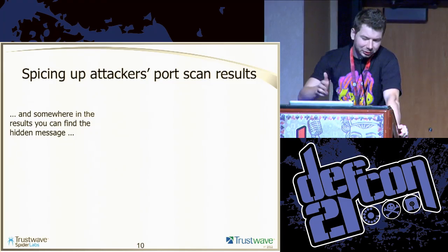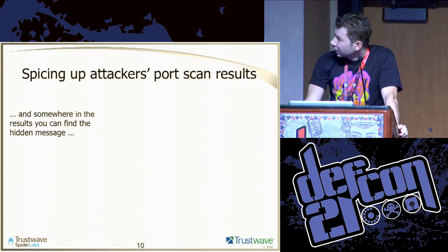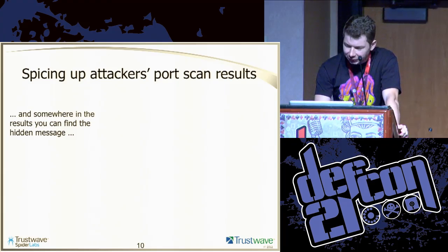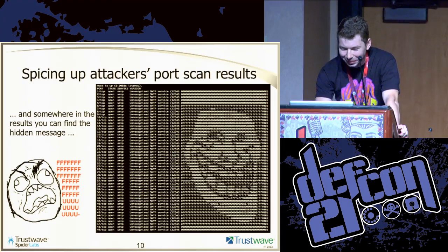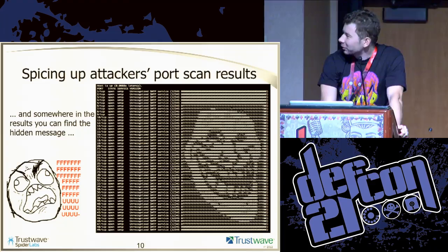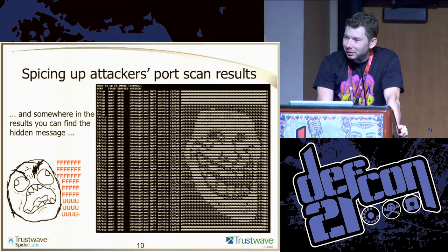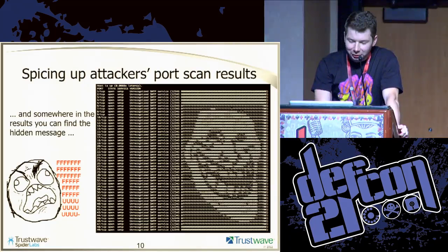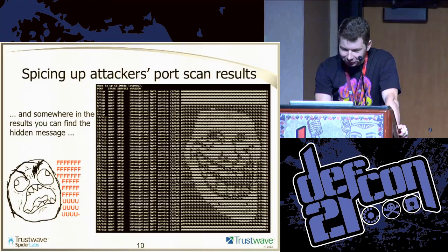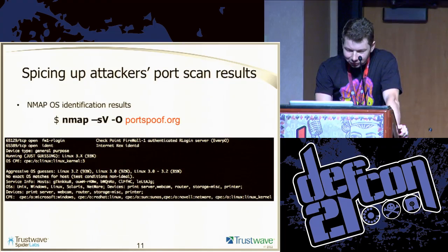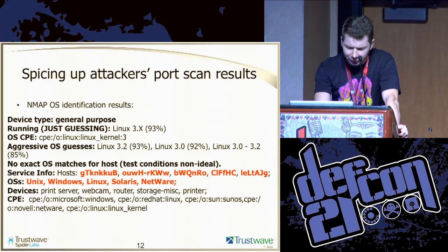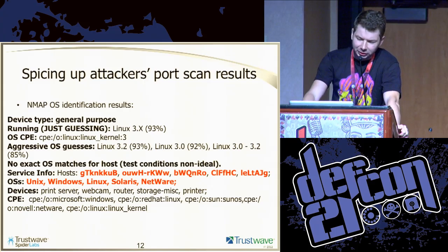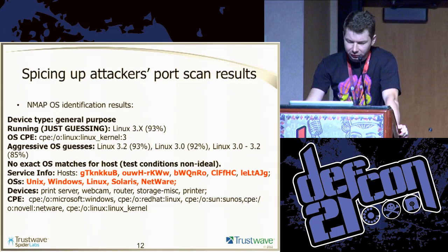Somewhere when attackers go through the service scan, they can find a hidden message. You can put any ASCII art there. Also, the OS detection results are a bit strange — for example, the real operating system was actually Linux 3.2, but here you have unsure results showing Unix, Windows, Linux, Solaris. You don't know what it is.